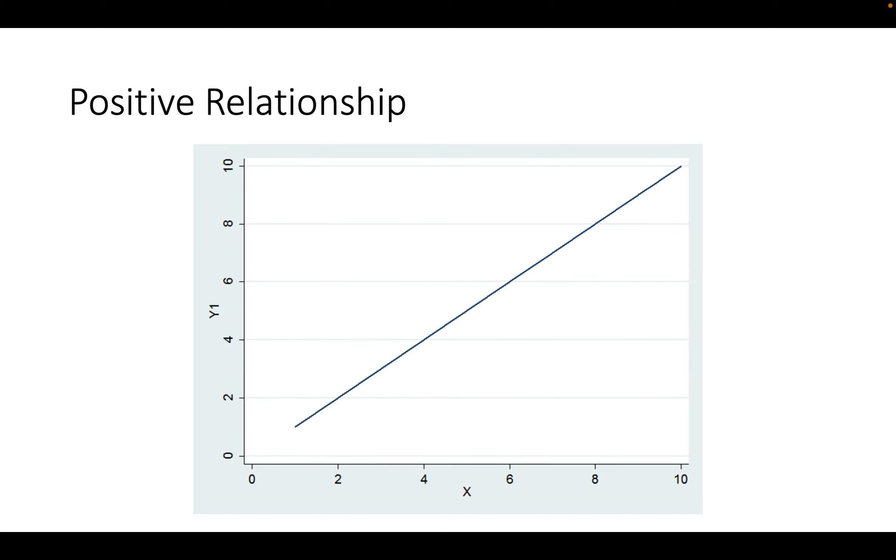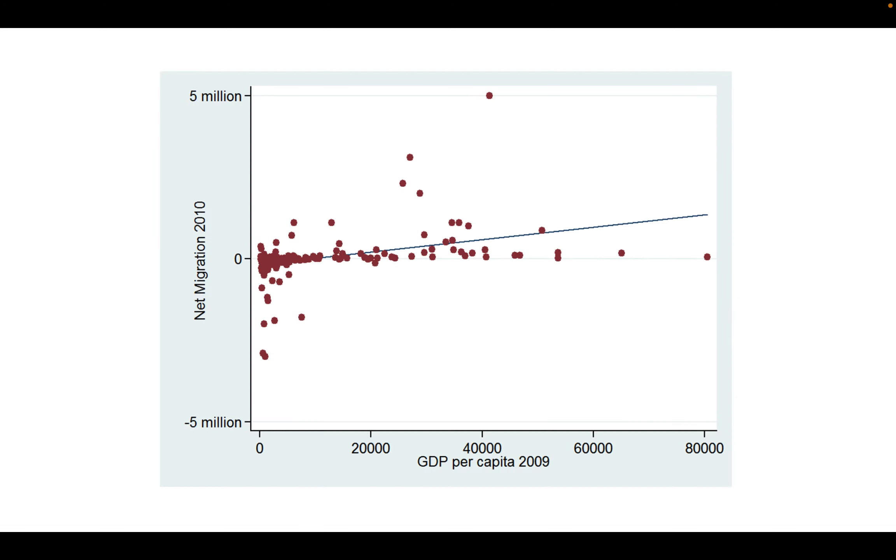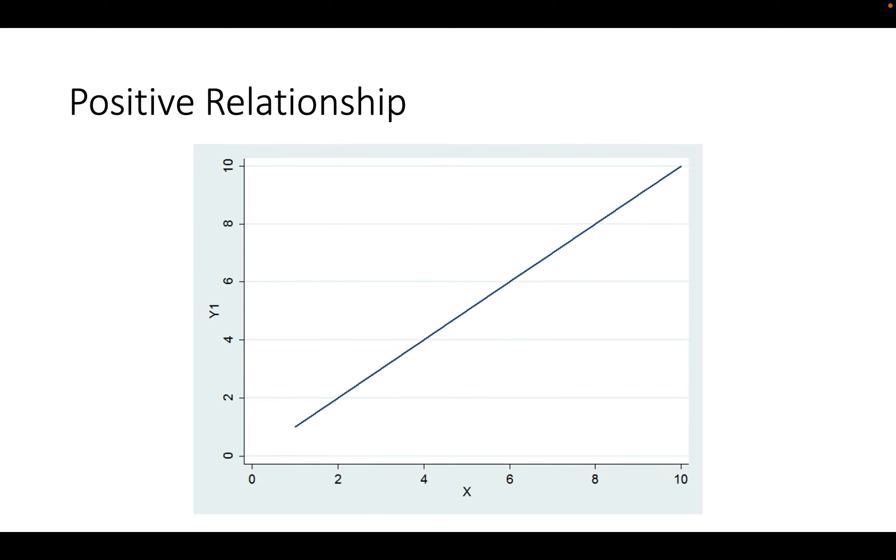So for a positive relationship, we can see that as x goes up in value, so does y. And that's described very well to the relationship between GDP per capita and migration into a country. That's a positive relationship.